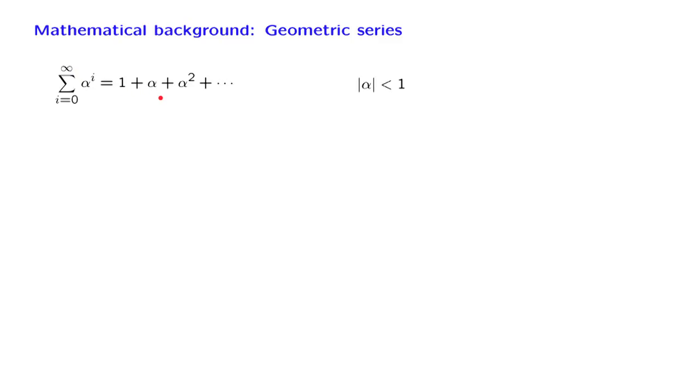Now, for this series to converge, we need subsequent terms, the different terms in the series, to become smaller and smaller. And for this reason, we're going to make the assumption that the number alpha is less than 1 in magnitude, which implies that consecutive terms go to 0.